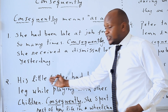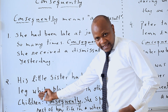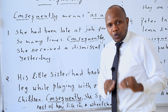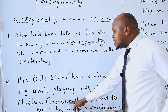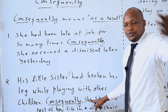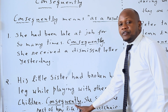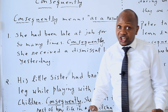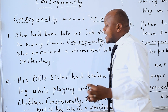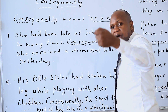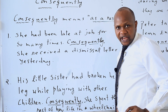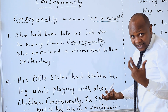Then you can say: his little sister had broken her leg while playing with other children. Consequently, she spent the rest of her life in a wheelchair. Do you know a wheelchair? Consequently — as a result — she spent the rest of her life in a wheelchair. Do you get it? That is 'consequently.'